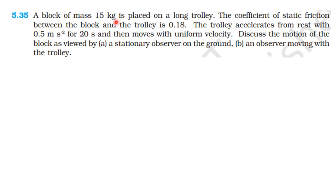A block of mass 15 kg is placed on a long trolley. The coefficient of static friction between the block and the trolley is 0.18. The trolley accelerates from rest at 0.5 m/s² for 20 seconds and then moves with uniform velocity. Discuss the motion of the block as viewed by a stationary observer on the ground and by an observer moving with the trolley.